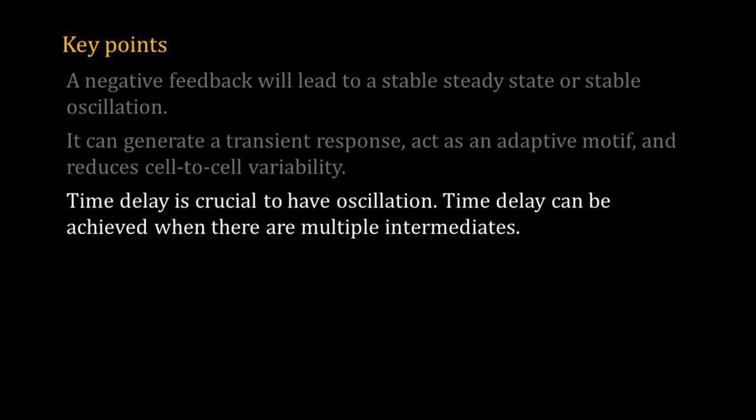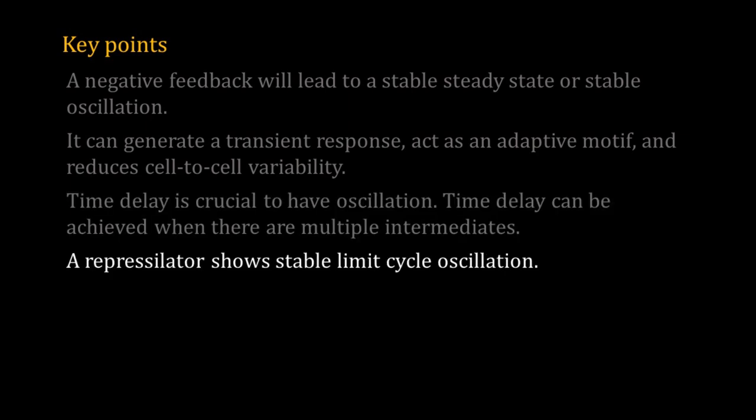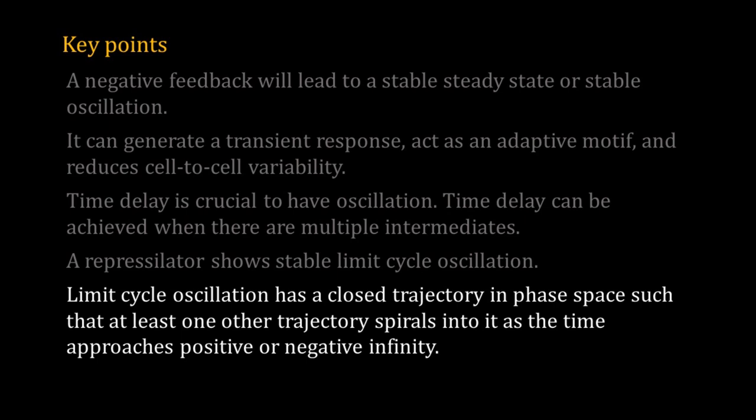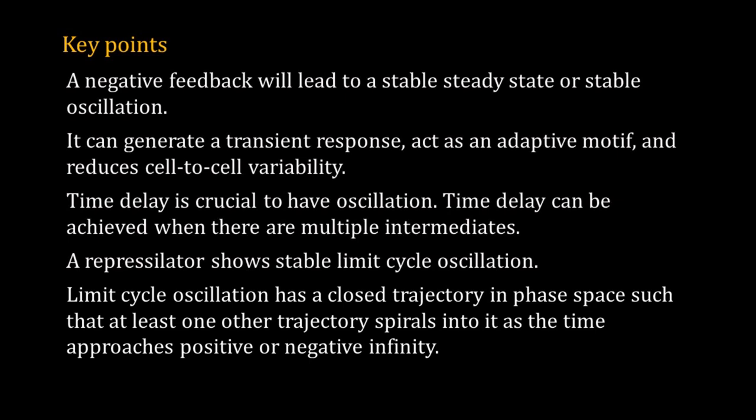Time delay is crucial to have oscillation. Time delay can be achieved when there are multiple intermediates. A repressilator shows stable limit cycle oscillation. Limit cycle oscillation has a closed trajectory such that at least one other trajectory spirals into it with time. That's all for this video. Thank you for watching.